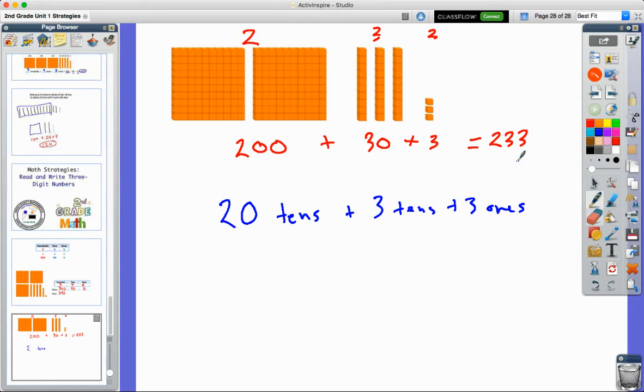Or we could think about how many ones are in this problem. Well, there's 100 ones, another 100 ones, so that's 200 ones. We've got 10, 20, 30 ones here, and three ones. So really, there would be 233 ones if we counted each one of those little blocks separately.